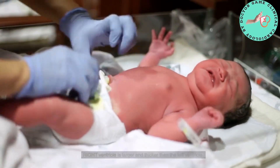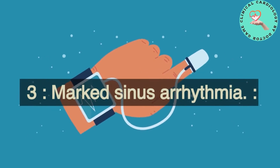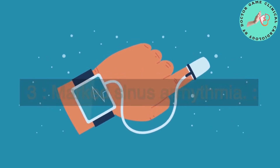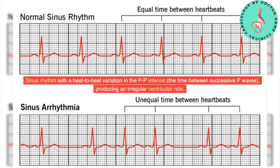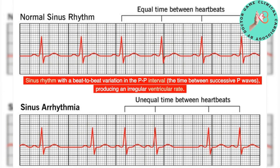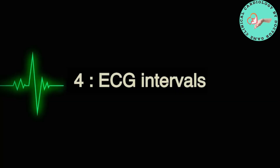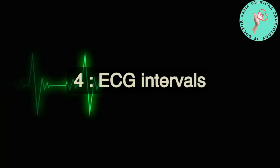Three: marked sinus arrhythmia — sinus rhythm with a beat-to-beat variation in the PP interval, which is the time between successive P waves, producing an irregular ventricular rate.